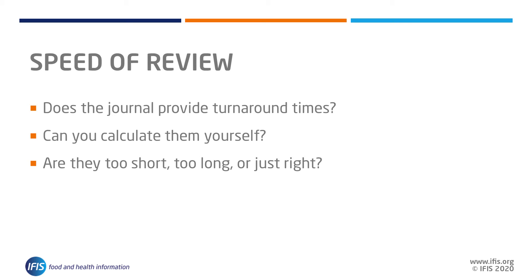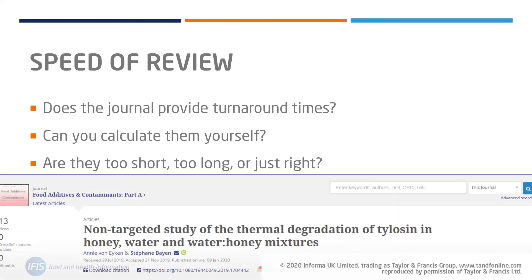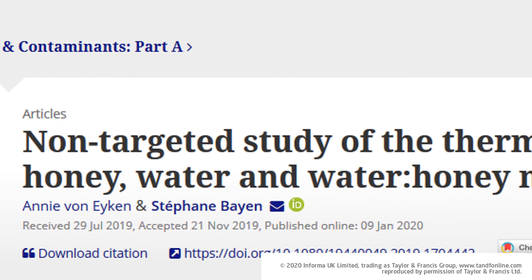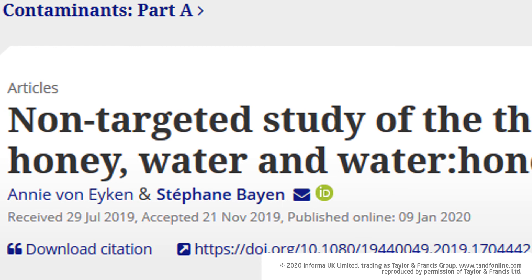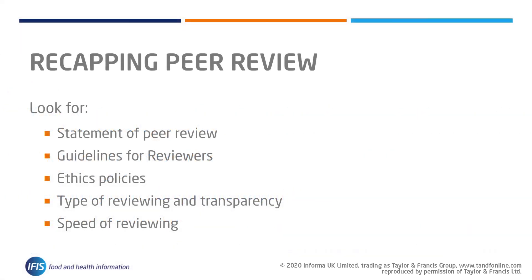Some journals may provide statistics on the average peer review times or time from first submission to publication dates on their websites. You could estimate peer review times by checking the received, accepted, and published dates of a paper published on a website — quite often these dates are included in the paper. Look at several recent papers and average out the timescales to get a rough idea of the current reviewing and publication turnaround times.